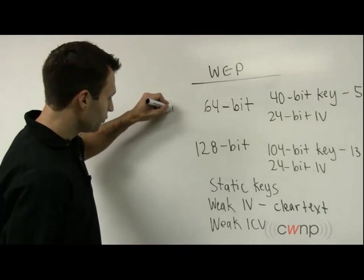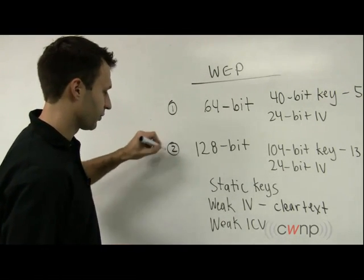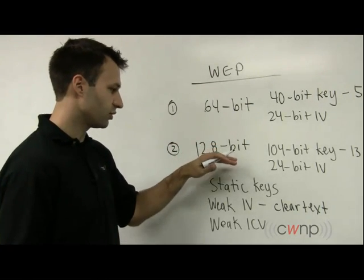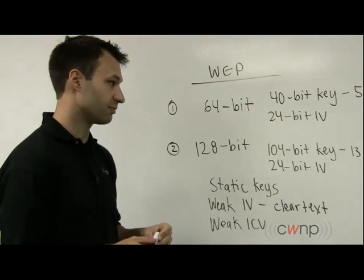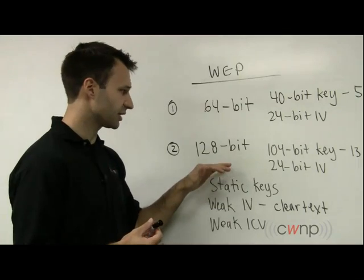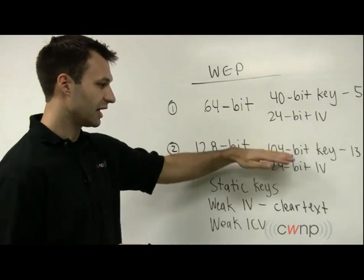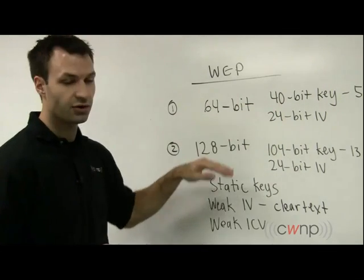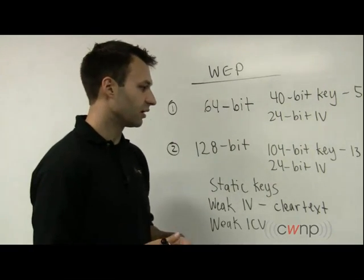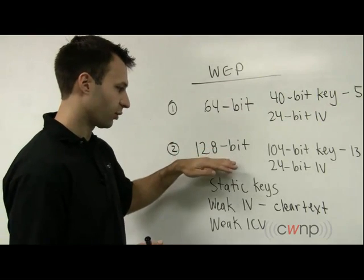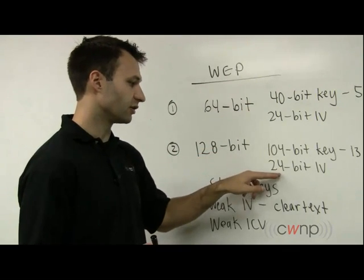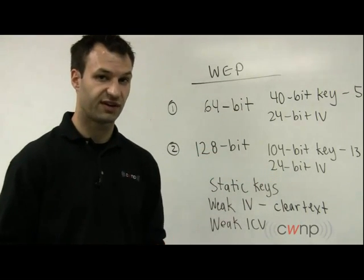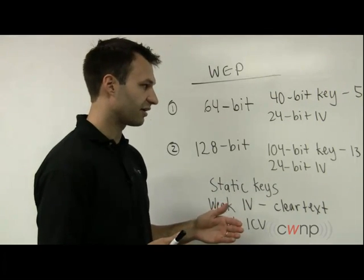There are two basic implementations of WEP, the 64-bit mode and the 128-bit mode. You often sometimes see these referred to as a 40-bit mode and a 104-bit WEP. And that just depends on how you're breaking down the bits. So both modes, 64 and 128-bit, use a 24-bit initialization vector, also known as an IV.